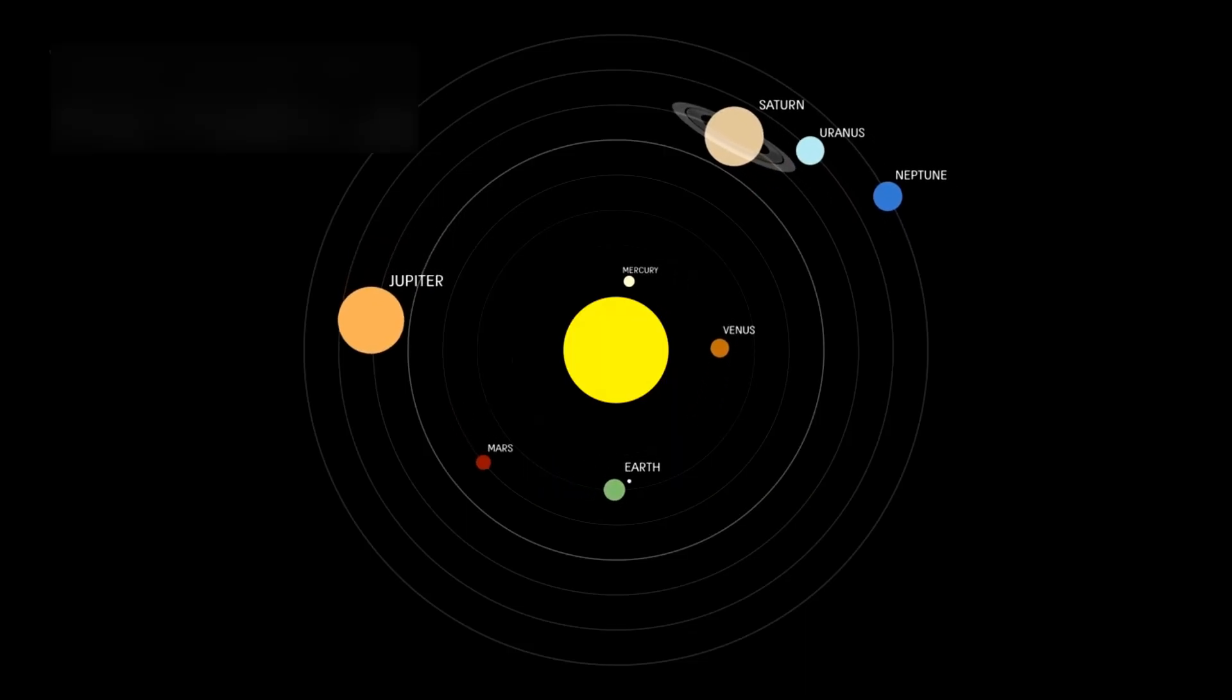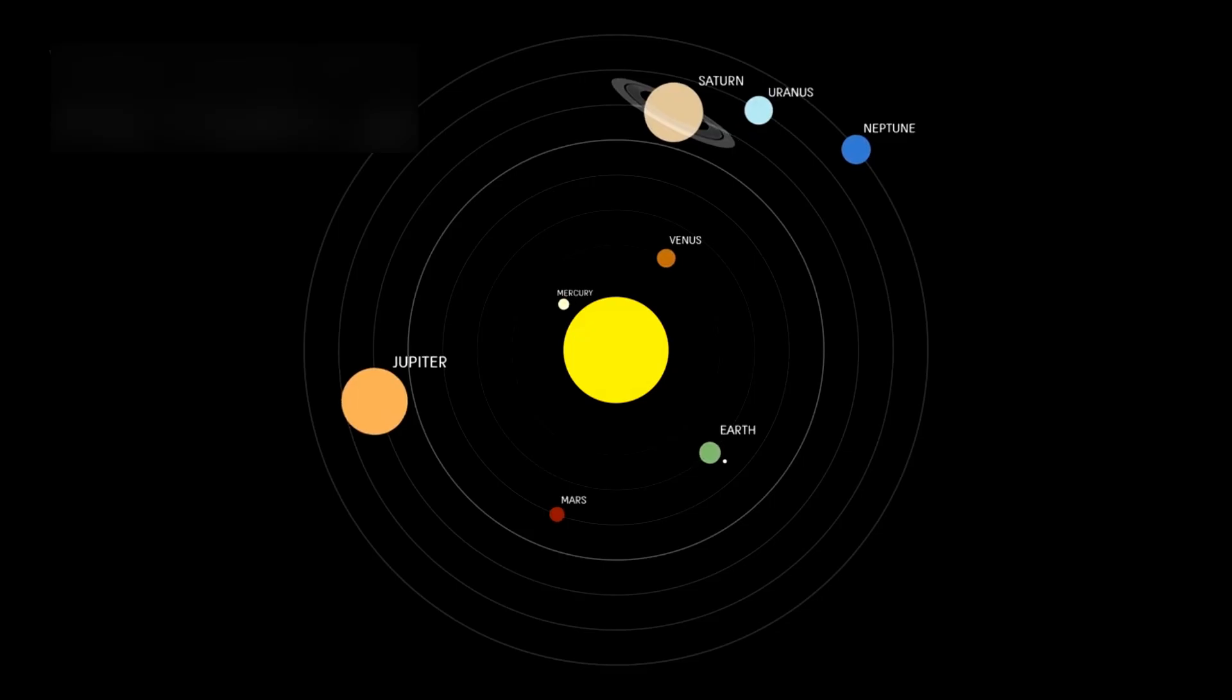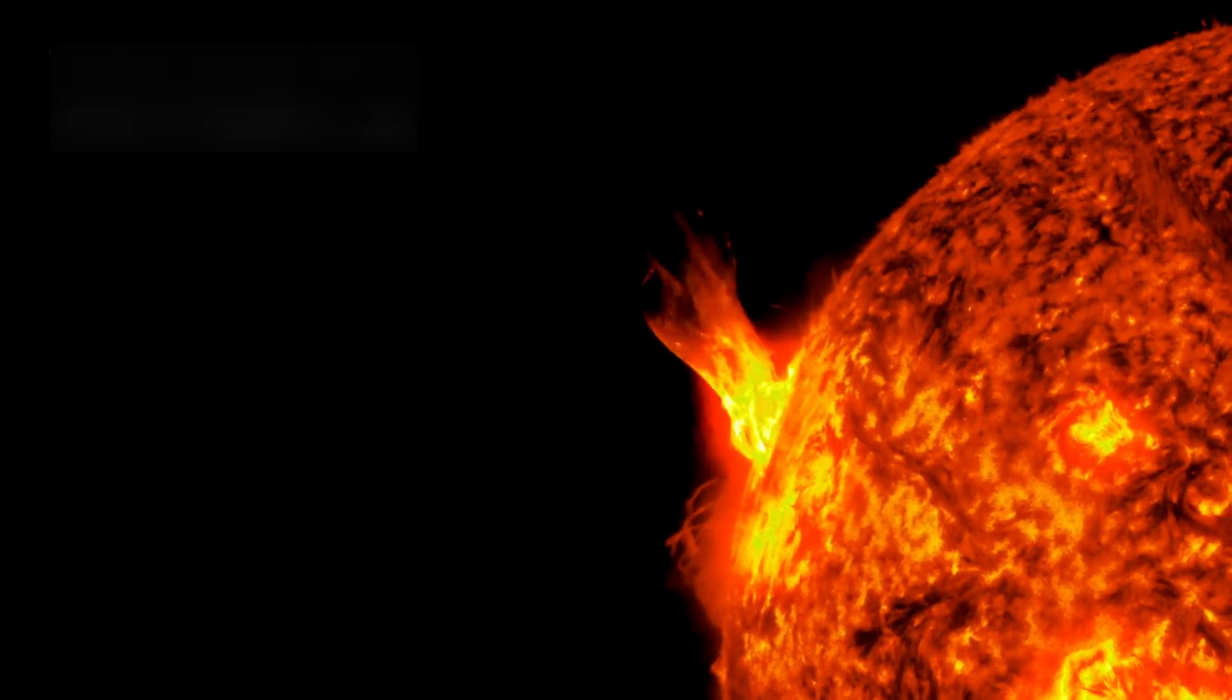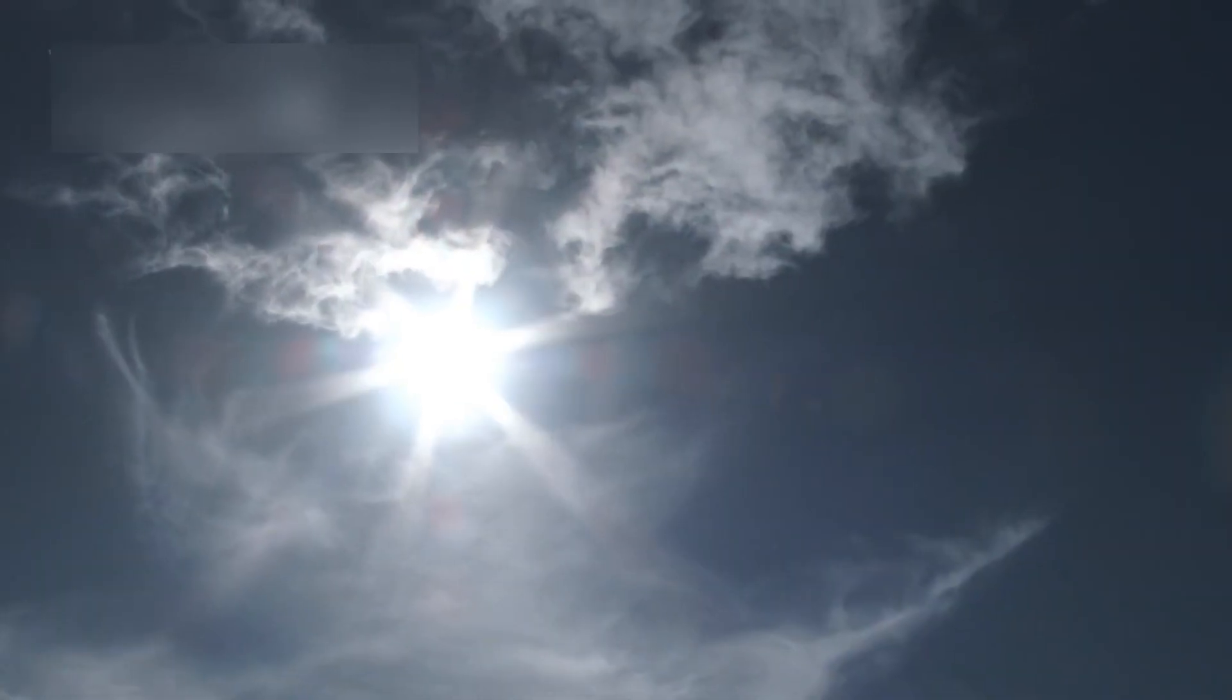The area where our solar system ends and interstellar space begins isn't fixed. It expands and contracts depending on the sun's 11-year activity cycle. When the sun is more active, the boundary pushes outward. When it's quieter, space pushes back in. This discovery has helped refine how we understand the solar system's boundary with the galaxy.